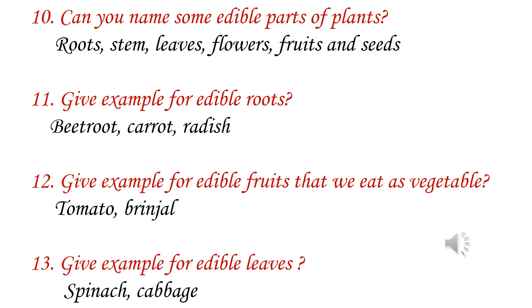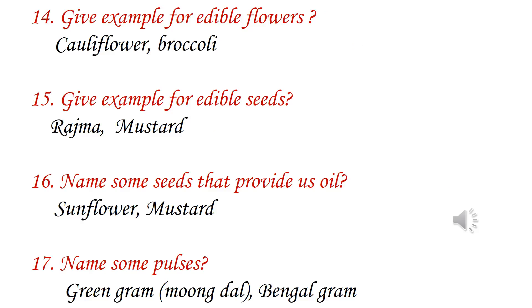Give an example for edible fruits that we eat as vegetables: tomato, brinjal. Give an example for edible leaves: spinach and cabbage. Give an example for edible flowers: cauliflower, broccoli. Give an example for edible seeds: rajma, mustard.